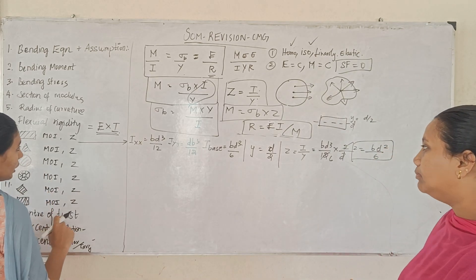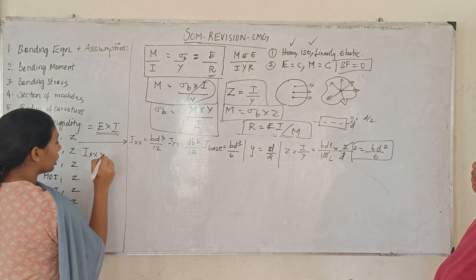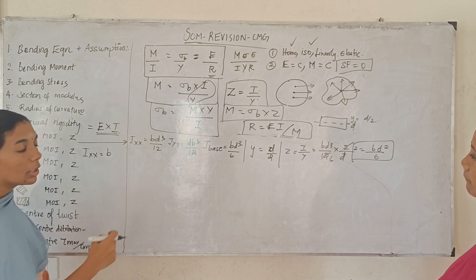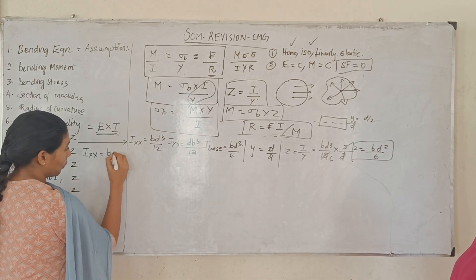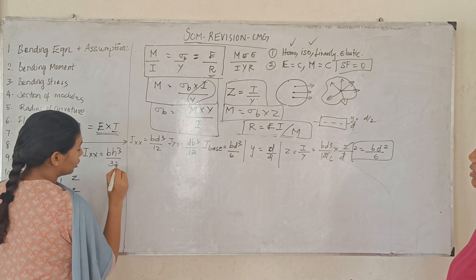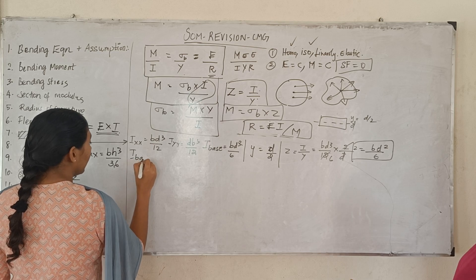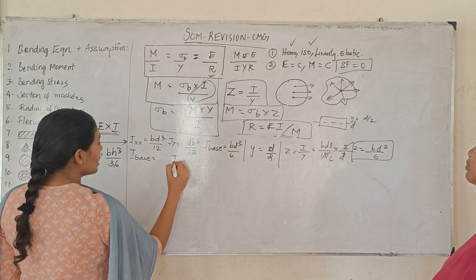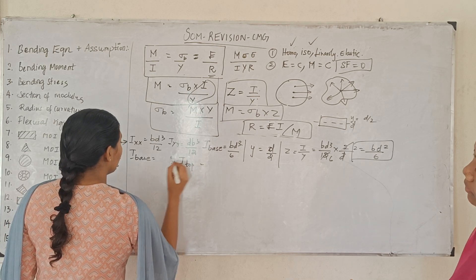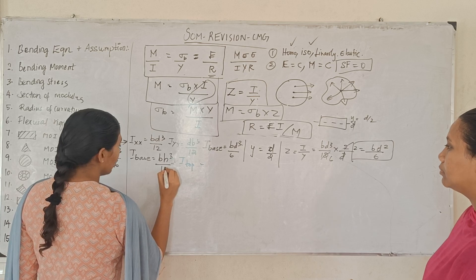Next is triangle. For a triangle about the x-axis: I equals B·H³ divided by 36. About the base: I equals B·H³ divided by 12.